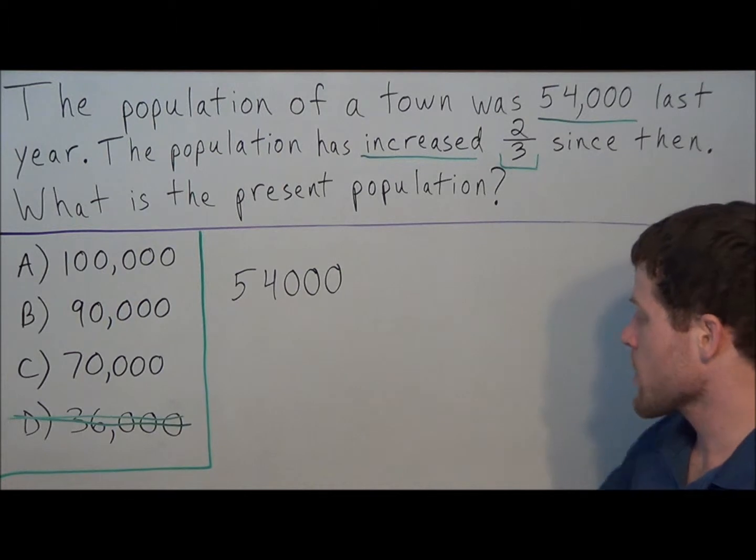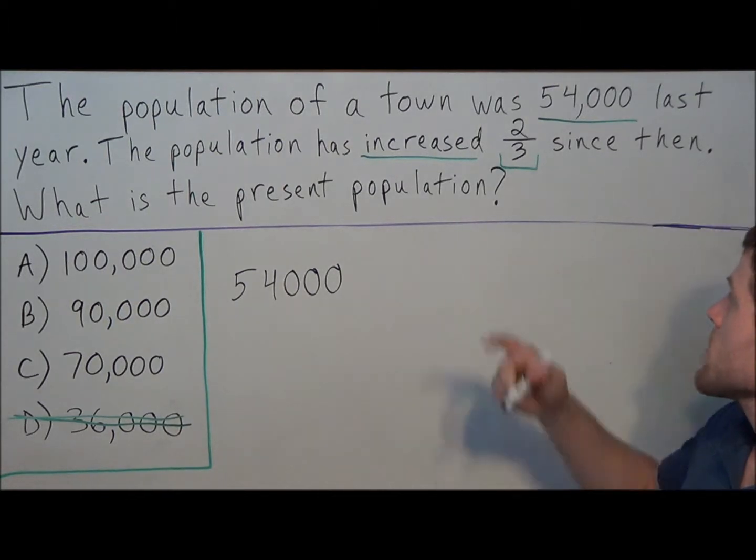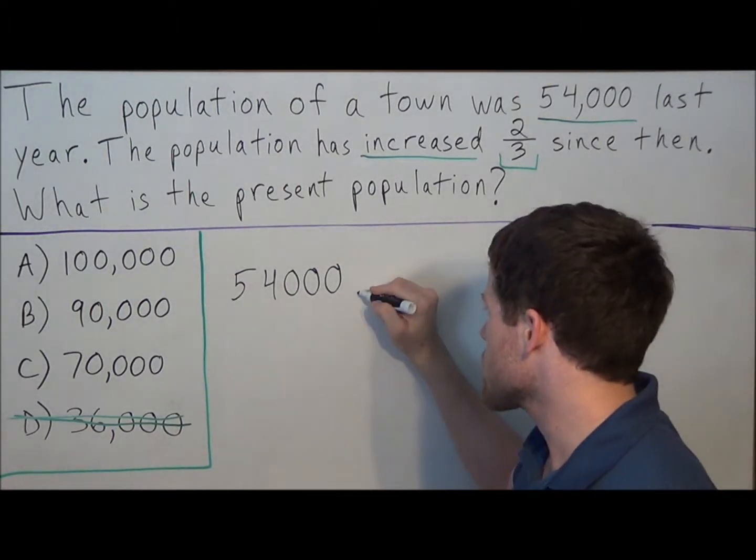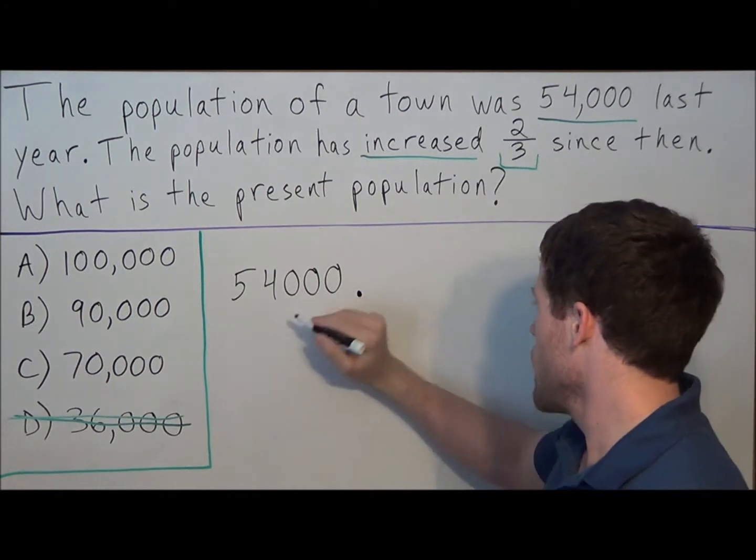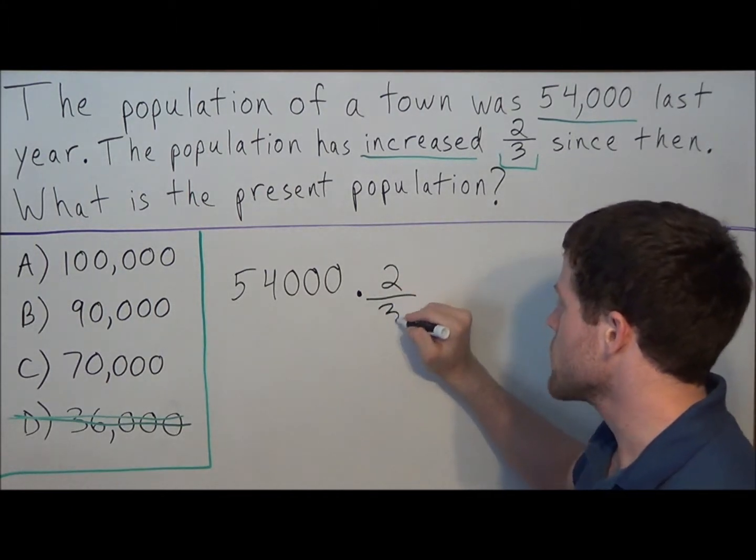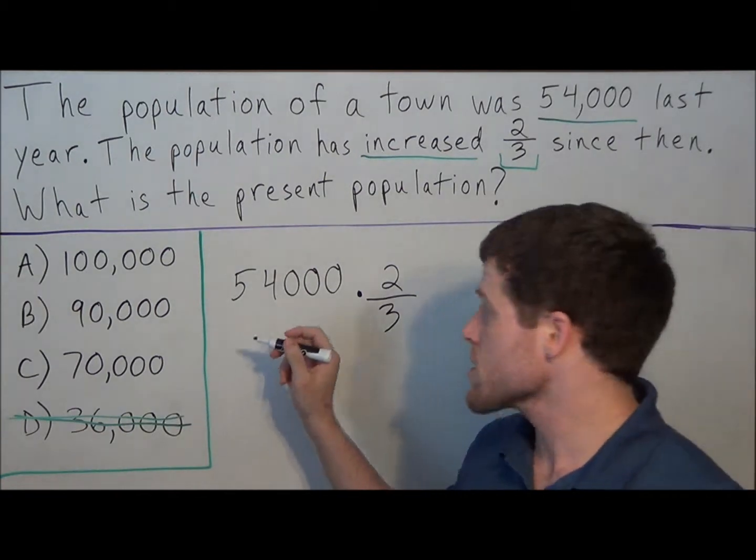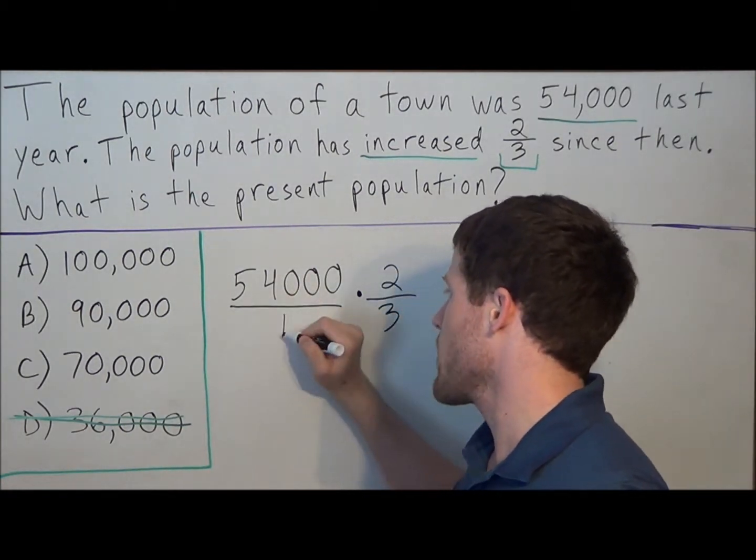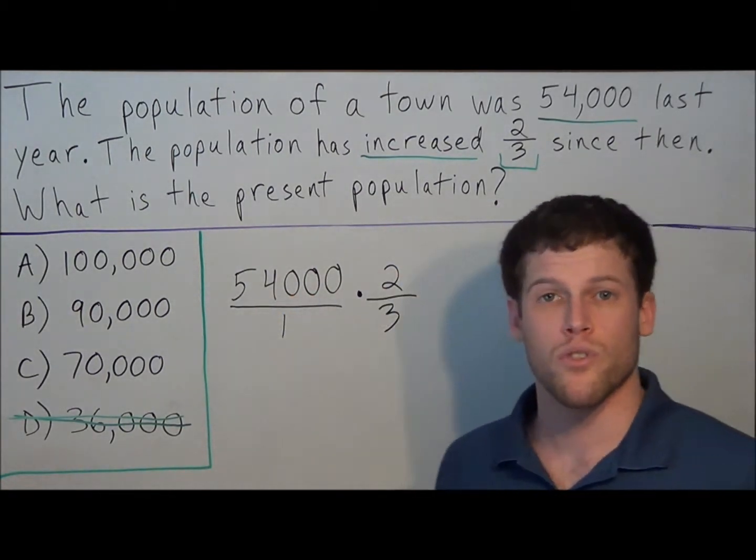So from this step here, now we have to think about the fraction. The population has increased two-thirds since then, so we're going to multiply 54,000 by two-thirds. But remember, when you're multiplying fractions, it's much easier if you simplify before you move forward with all the multiplication.